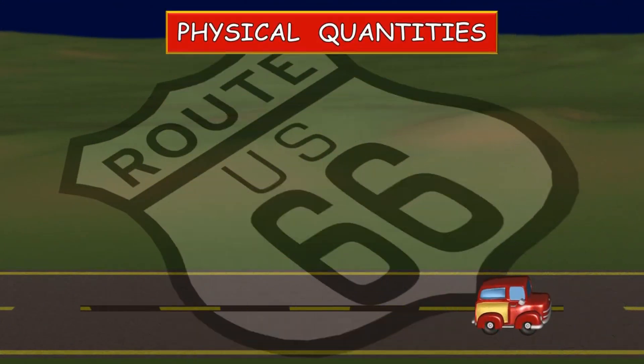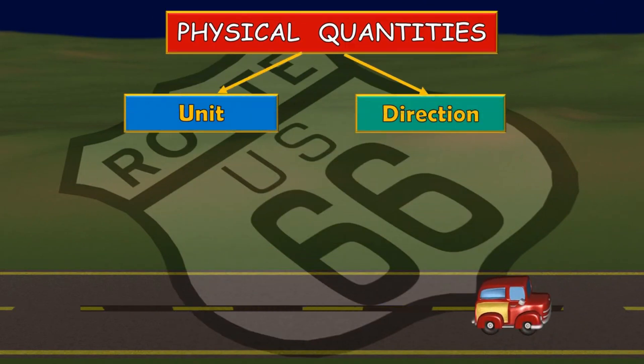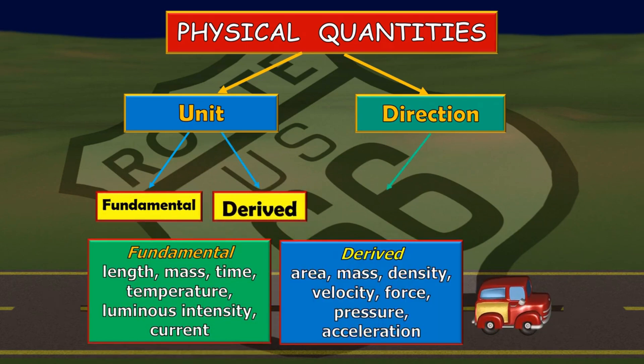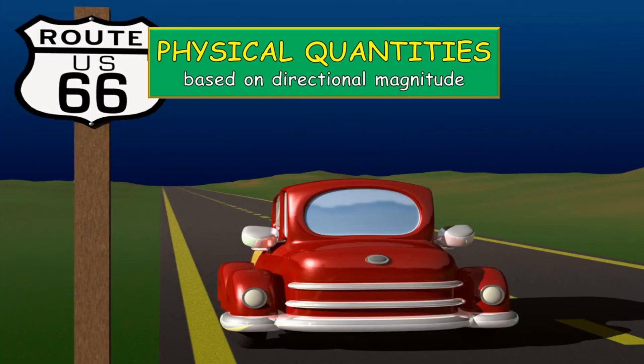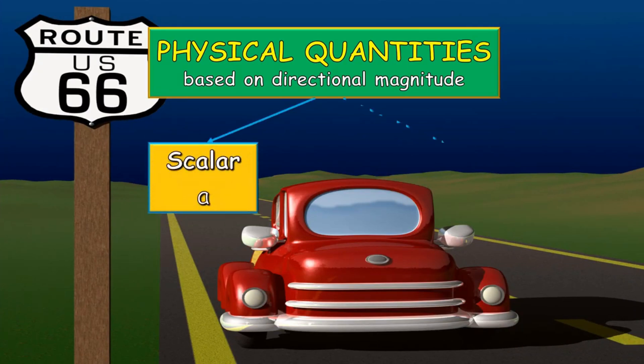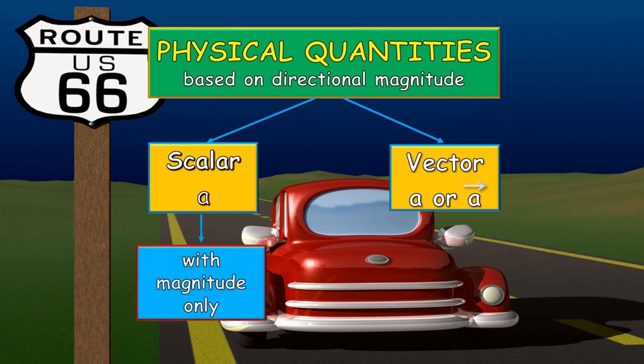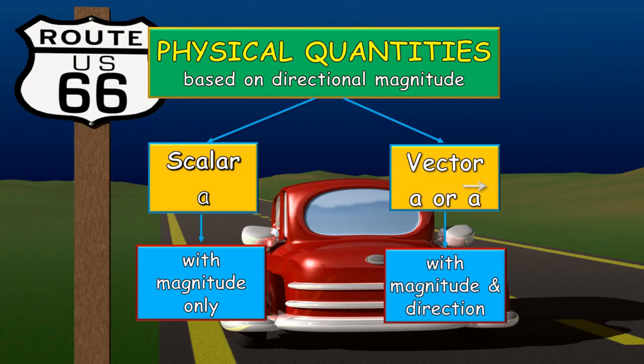Talking about physical quantities, we can divide it into two: we have the unit and also the direction. Under the unit, we have the fundamental and the derived quantities, and for direction, we have the scalar and the vector quantities. Let's concentrate with the physical quantities based on directional magnitude. We have the scalar quantity and vector quantity. In symbol, for you to differentiate the two, always remember if that is a vector quantity, you can see there an arrow on top of a symbol or letter. What is a scalar quantity then? When we are talking about scalar quantity, this is actually the magnitude of a certain measurement. When we are talking about vector, this is actually the magnitude with the direction involved.